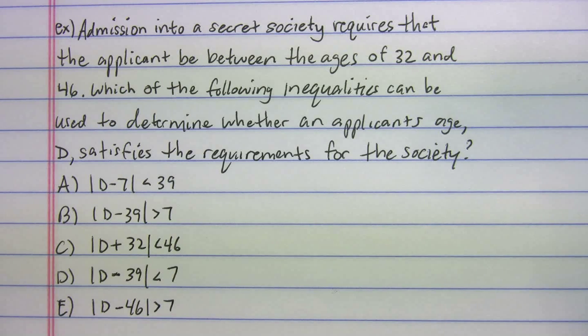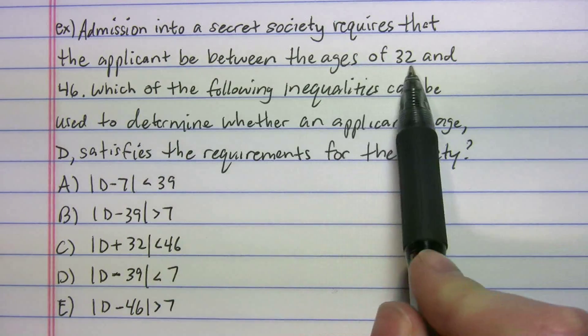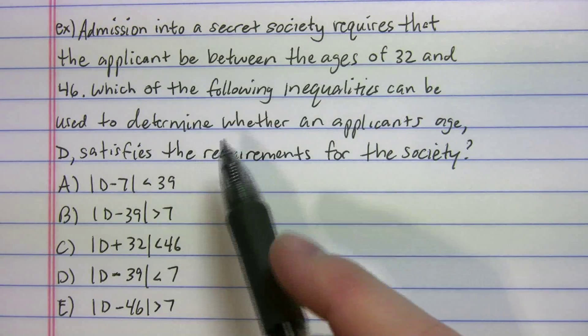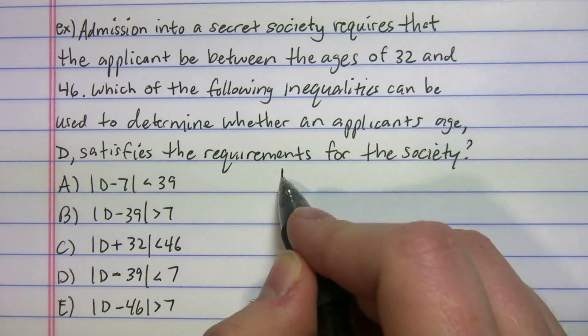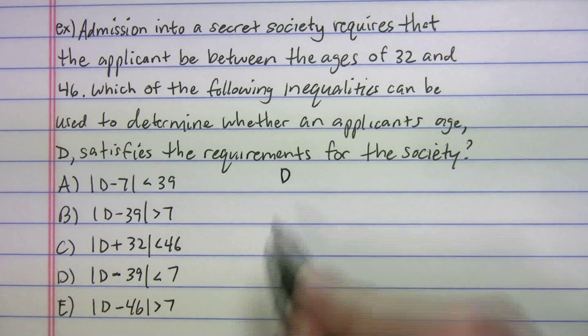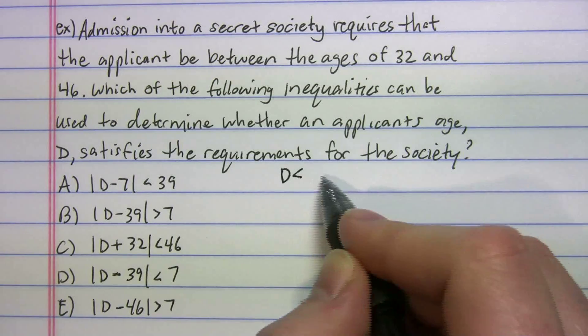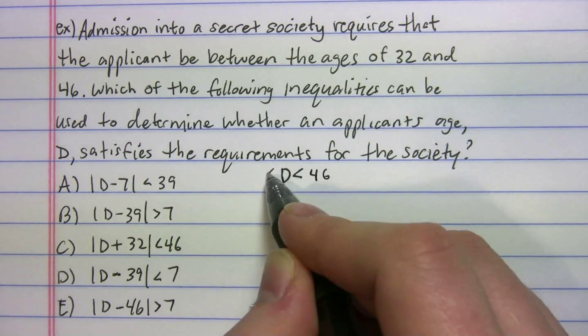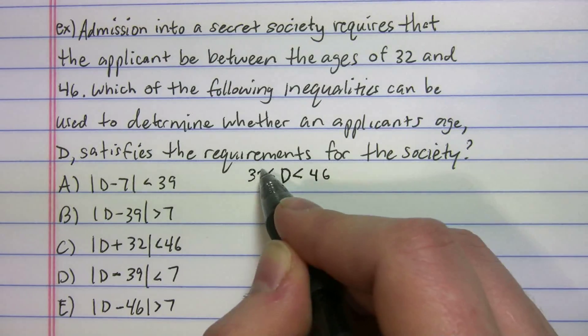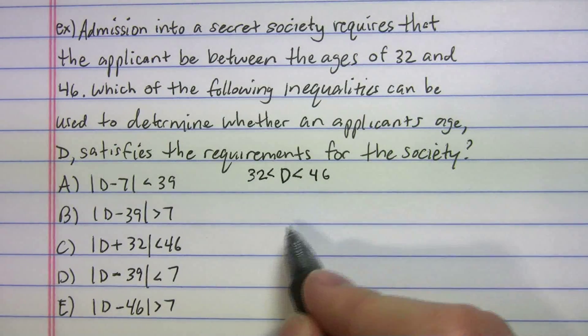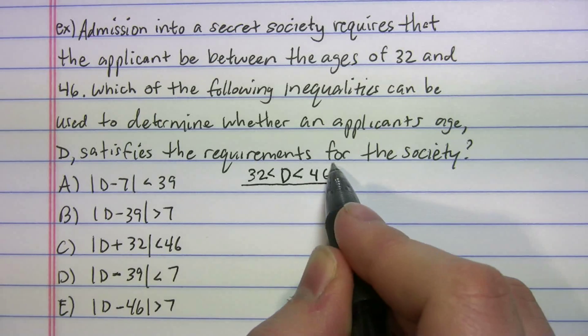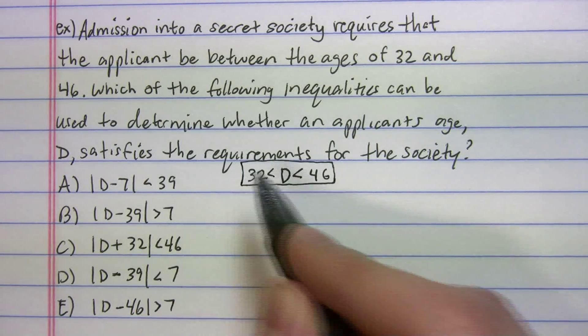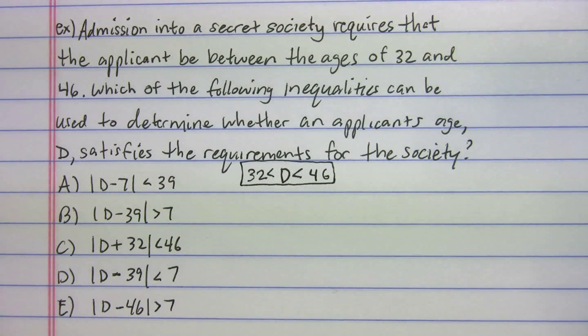So we have to figure out what's our range here, what values do we want? It says the applicant has to be between 32 and 46. So what we want to get is, if I put D the age there, the age has to be less than 46 but it's got to be greater than 32. So that's our goal, that's kind of what we're looking for here.